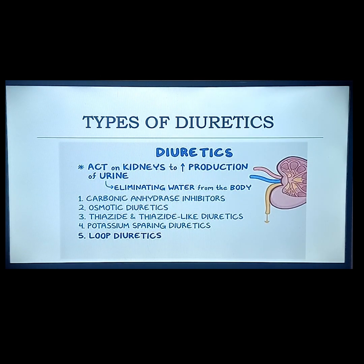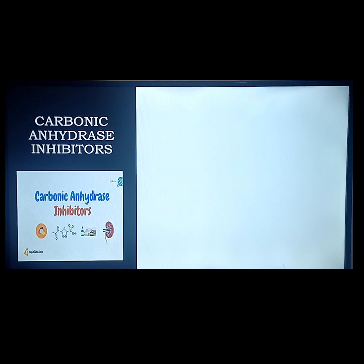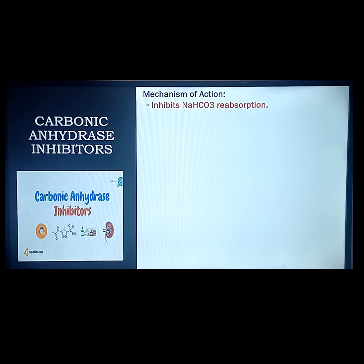The types of diuretics we will discuss are: carbonic anhydrase inhibitors, osmotic diuretics, thiazide and thiazide-like diuretics, potassium-sparing diuretics, and loop diuretics. Starting with carbonic anhydrase inhibitors — the mechanism of action includes inhibiting bicarbonate reabsorption. In the distal tubule, bicarbonate is reabsorbed through carbonic anhydrase, but this drug inhibits carbonic anhydrase, therefore inhibiting bicarb reabsorption, causing it to be excreted through urine.